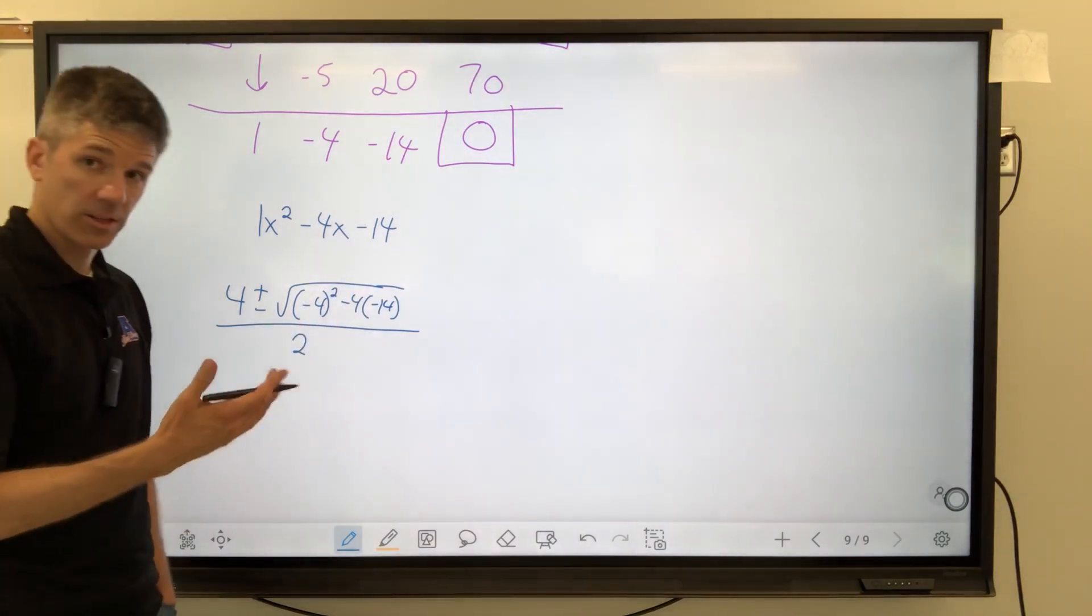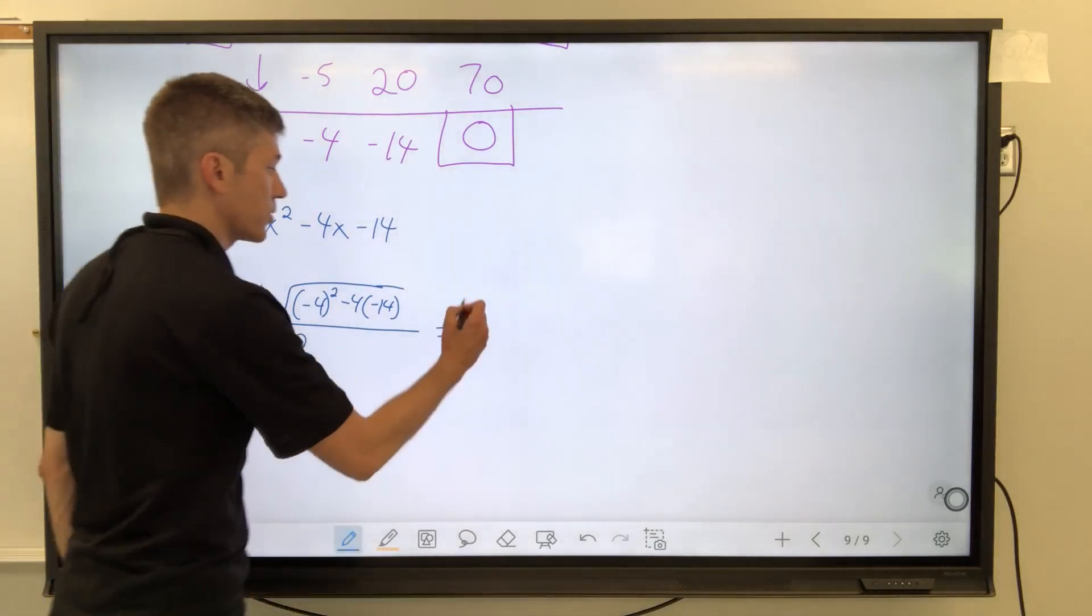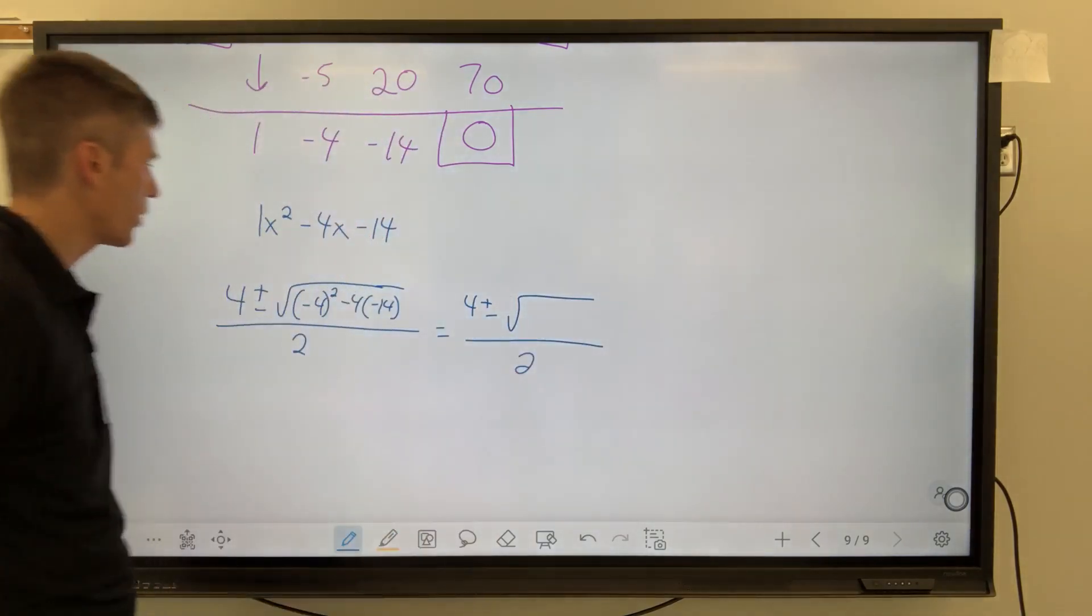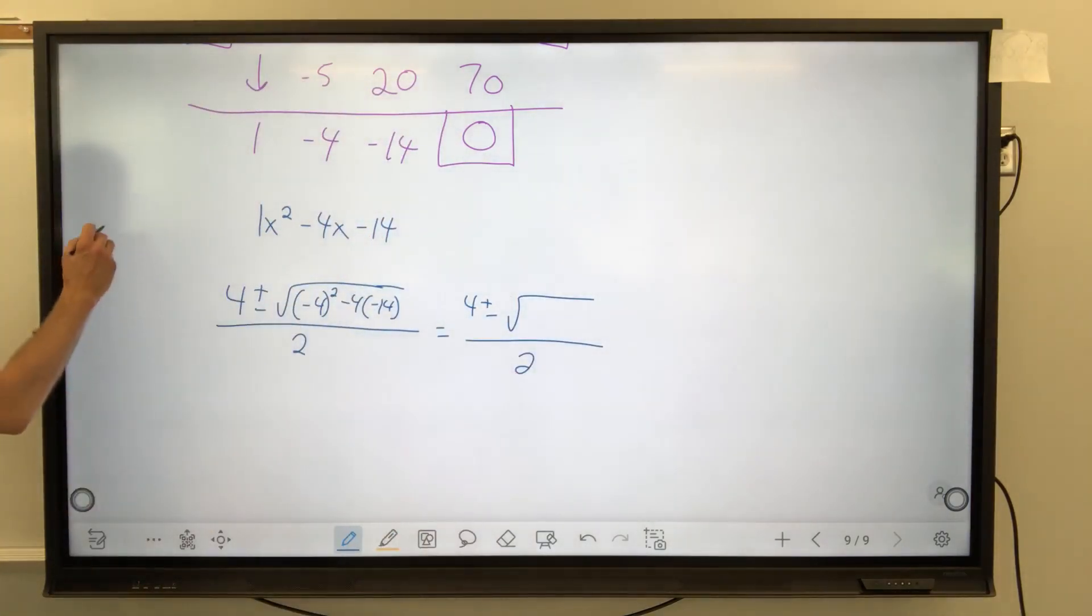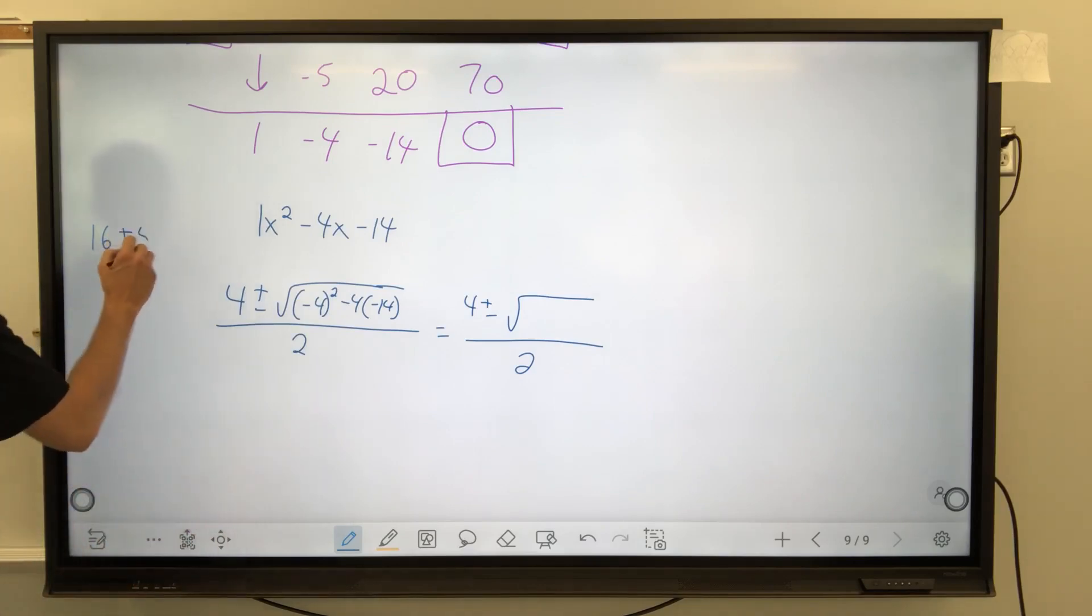All right. Again, we know we're not going to get an imaginary number. We are going to get something irrational. So, 4 plus or minus the square root of whatever's in there in the number of 2. So, 16 minus 4 times 14, so plus 4 times 14, 4 times 14 is a number. It is 40, 16, 56. So, that's going to give me 72.